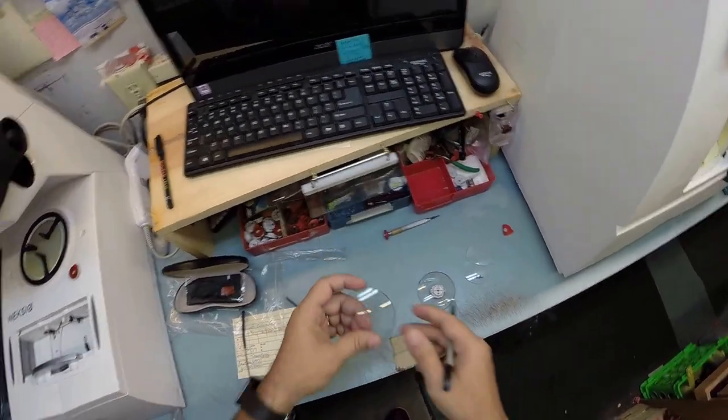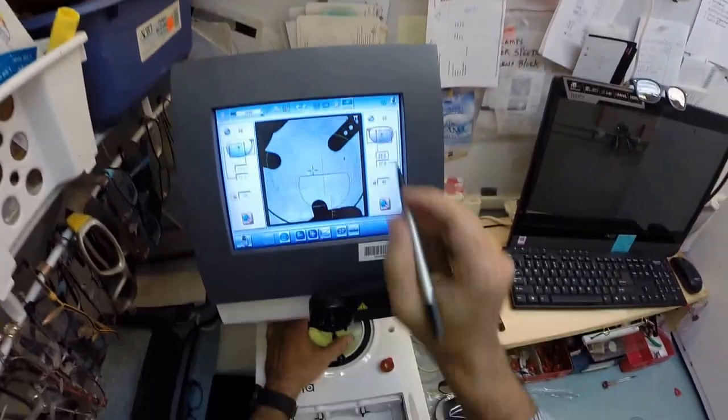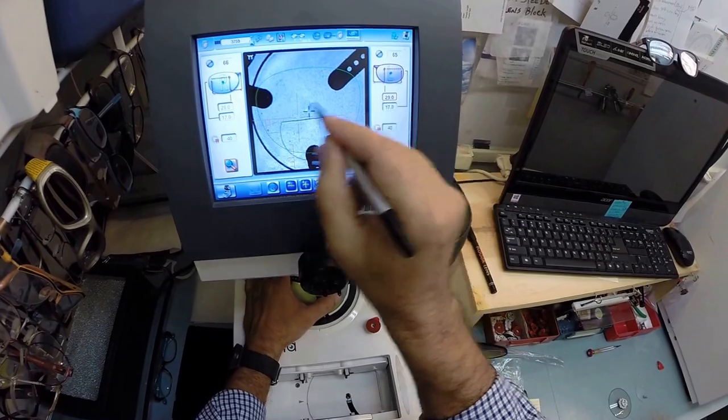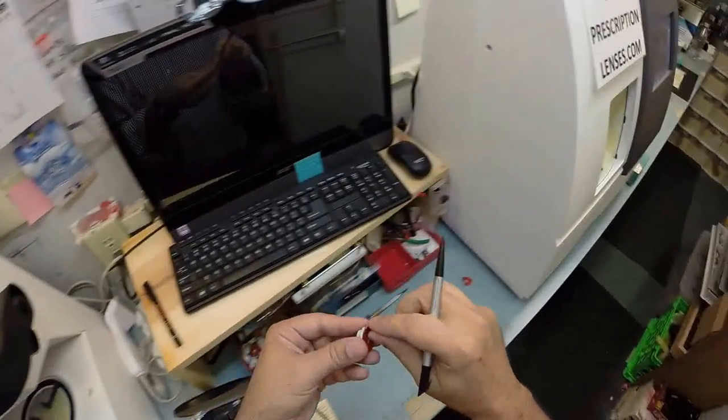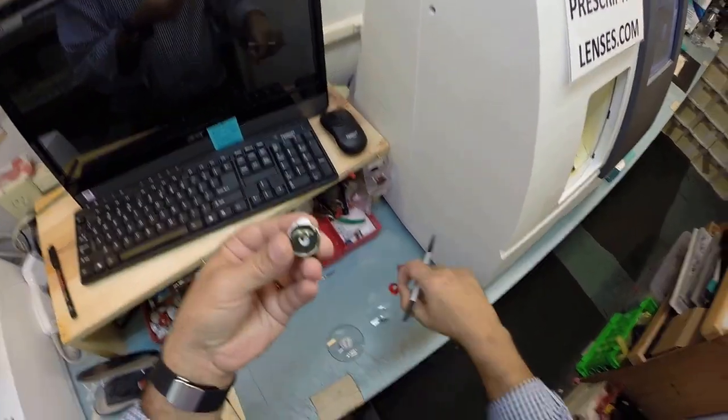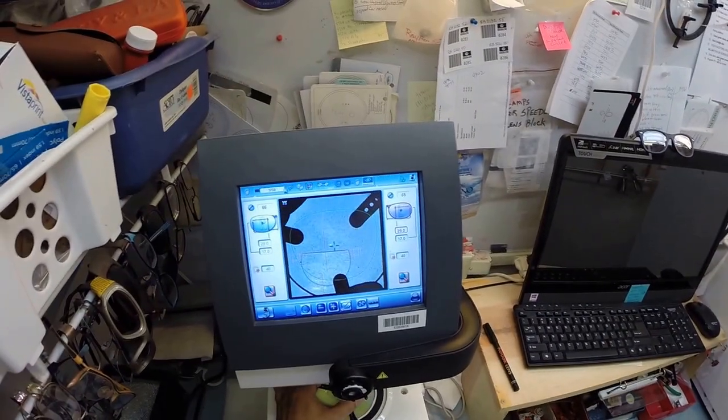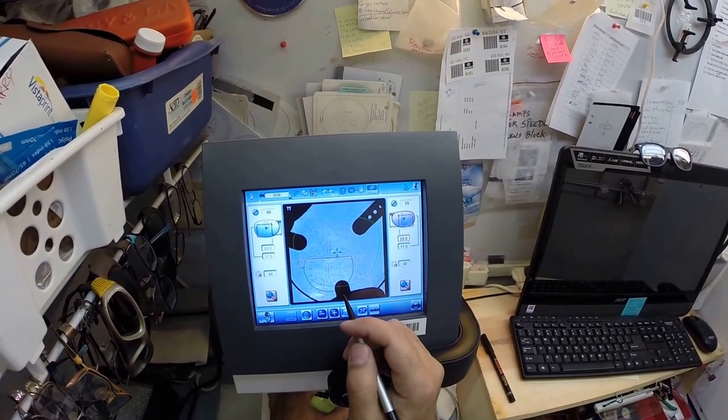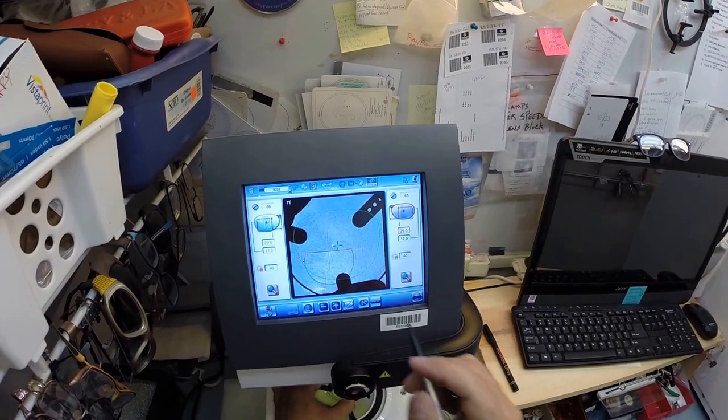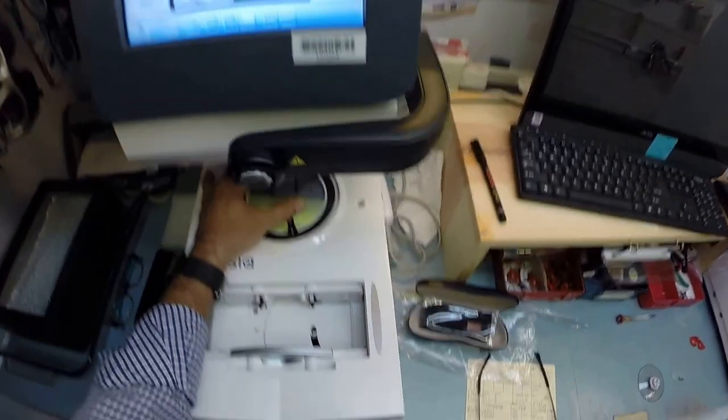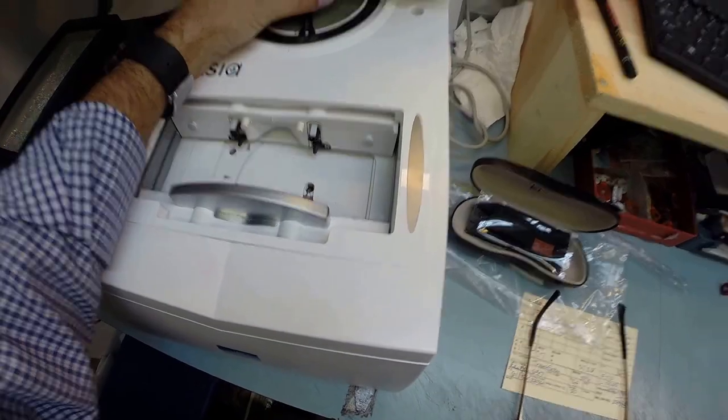We're gonna do the same thing now for the left lens. That's gonna flip over. All the measurements are gonna mirror the right. Let's pull the paper away to make the black side sticky. Line everything up perfectly and put everything inside the grid where it's supposed to go. Hit that button and now the block is gonna come down and be placed onto the left lens.